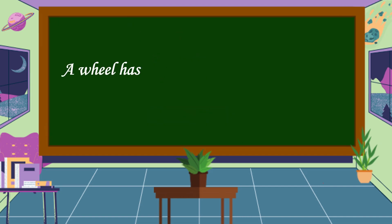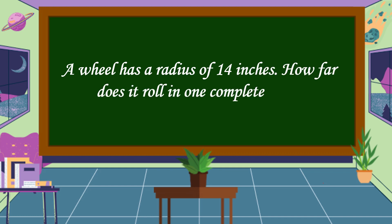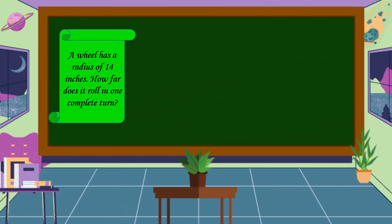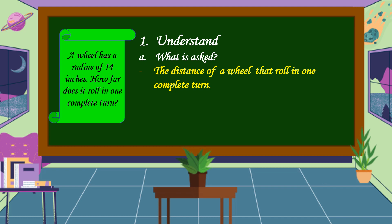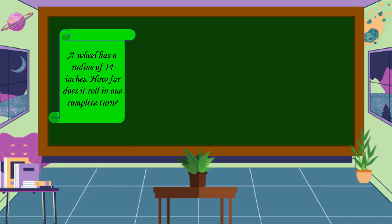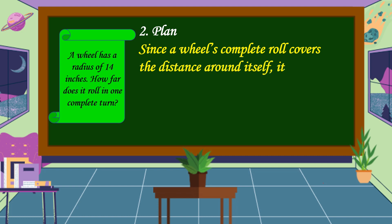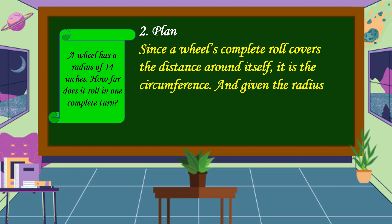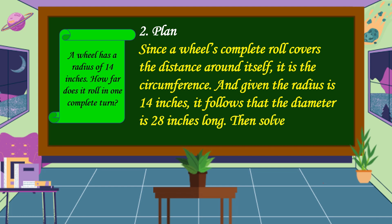Our next problem: a wheel has a radius of 14 inches. How far does it roll in one complete turn? First, we're going to understand the problem. What is asked? In this problem, it is asking for the distance a wheel rolls in one complete turn. The given fact is the wheel has a radius of 14 inches. The next step is we're going to make a plan. Since a wheel's complete roll covers the distance around itself, it is the circumference. Given the radius is 14 inches, it follows that the diameter is 28 inches long.